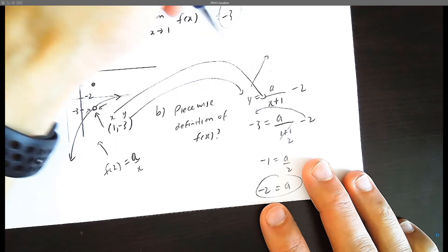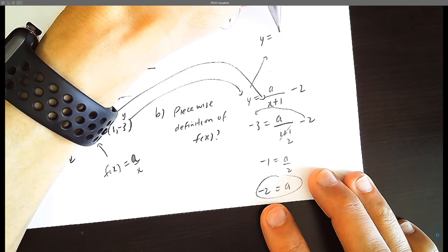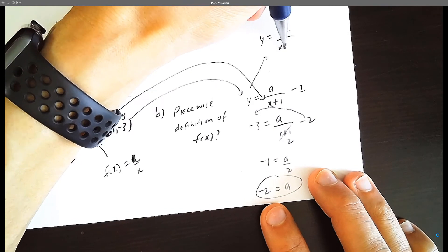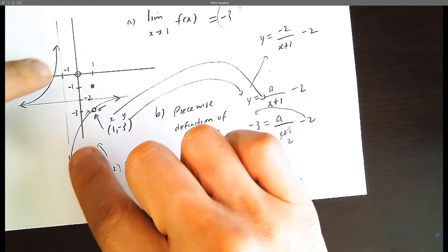So we're going to say that this piecewise function kind of looks very similar to the shape y equals negative 2 over x plus 1 minus 2. So that's the actual full version of this hyperbola.